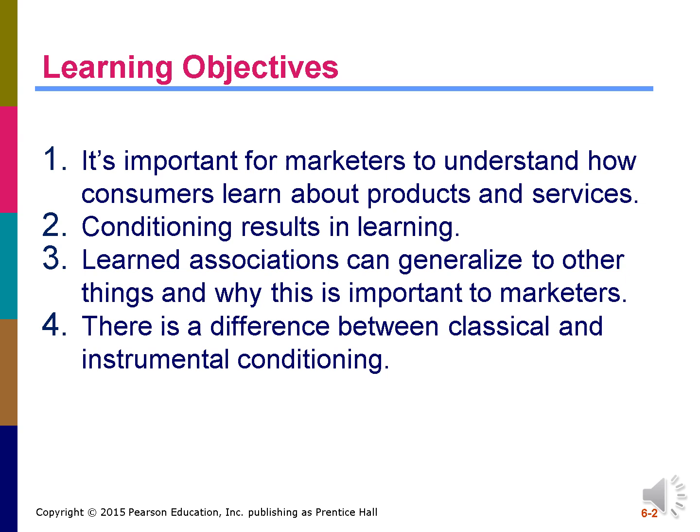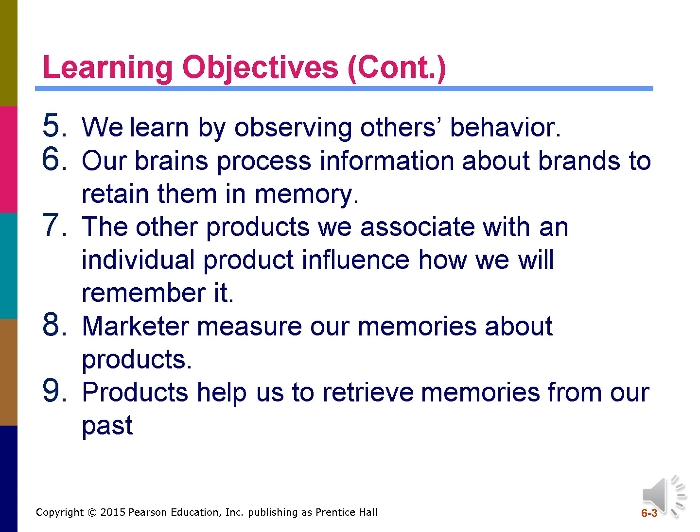We will discuss the following learning objectives in Chapter 6. It is important for marketers to understand how consumers learn about products and services. Conditioning results in learning. Learned associations can generalize to other things and why this is important to marketers. There is a difference between classical and instrumental conditioning. We learn by observing others' behavior. Our brains process information about brands to retain them in memory. The other products we associate with an individual product influence how we will remember it. Marketers measure our memories about products. Products help us to retrieve memories from our past.